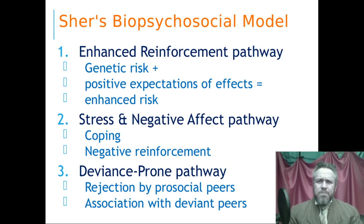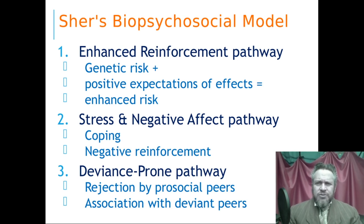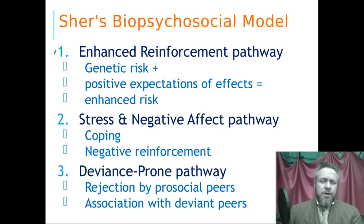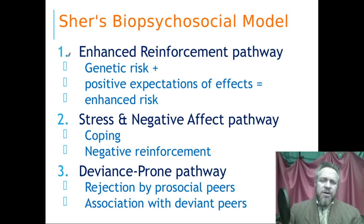The only model we're going to talk about in this lecture is Cher's biopsychosocial model. You're going to have to get used to words like that if you're going to do anything psychological, public health related, or medical. There is a reasonable amount of evidence consistent with this model — it's a useful model so far. It says that there are three pathways to and through problematic substance use. These are not brain pathways; these are conceptual pathways through life.